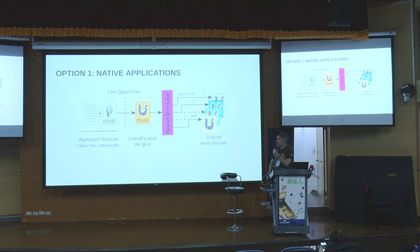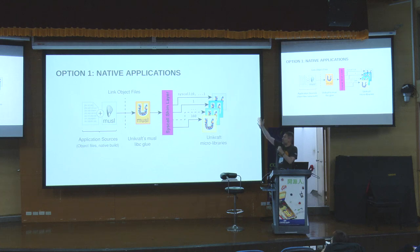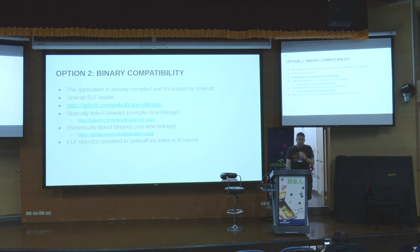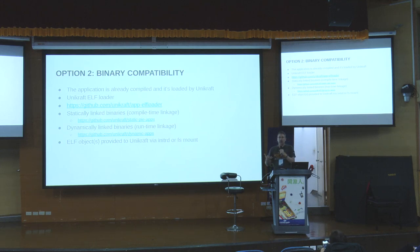You build with your standard library as normal, and then on runtime this will make syscalls. We have a syscall shim layer that will invoke functions on different micro-libraries depending on the syscall. The other way is binary compatibility — you can take a compiled application and have Unicraft load it and run it for you. Unicraft supports ELF, the binary format used on Linux, and we have an app ELF Loader which is capable of loading and dynamically linking ELF objects.